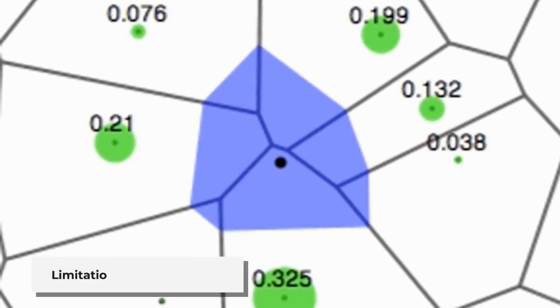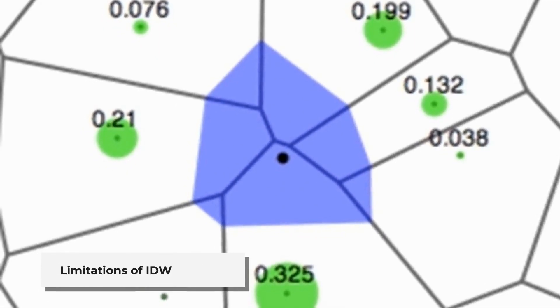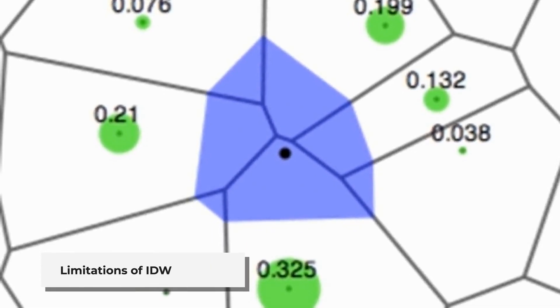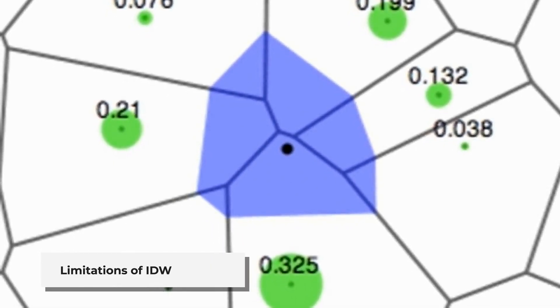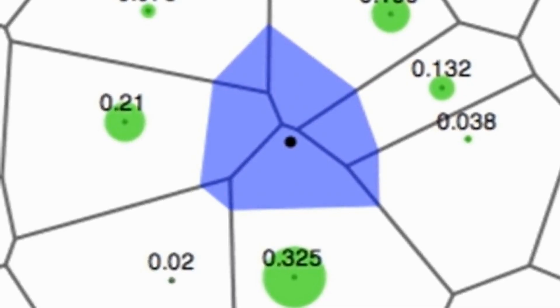Disadvantages: IDW struggles with very steep or mountainous areas where values might be extreme. Also, it can't estimate values beyond the highest or lowest points in your data.